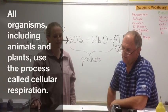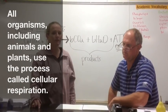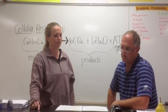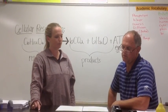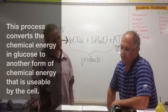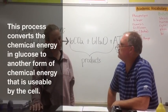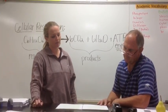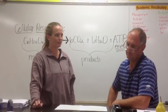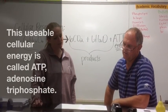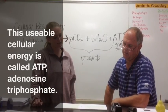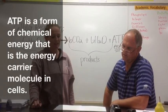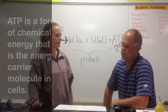All organisms, including plants and animals, use cellular respiration to convert the chemical energy in glucose into another form of chemical energy that is usable by the cell. All organisms have to convert glucose into usable cellular energy that we call ATP. ATP stands for adenosine triphosphate and is another form of chemical energy.